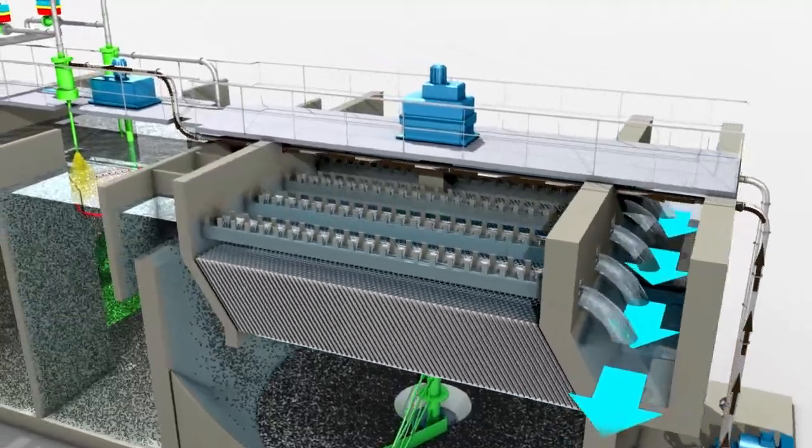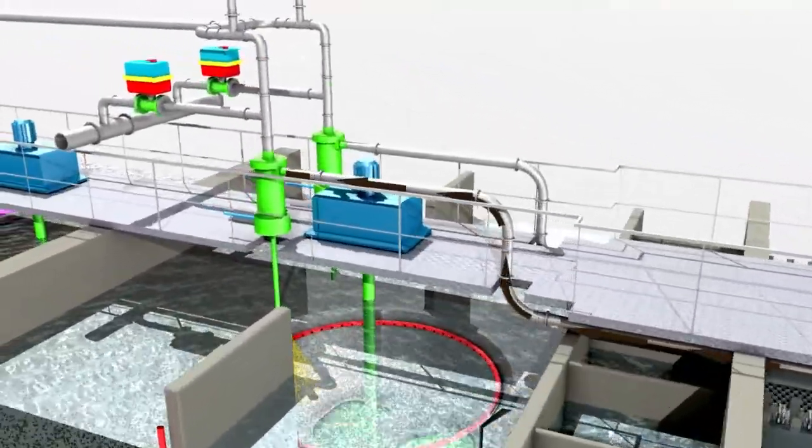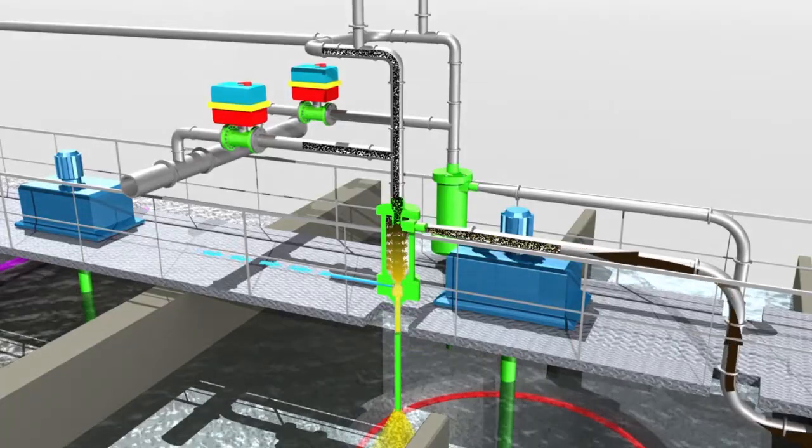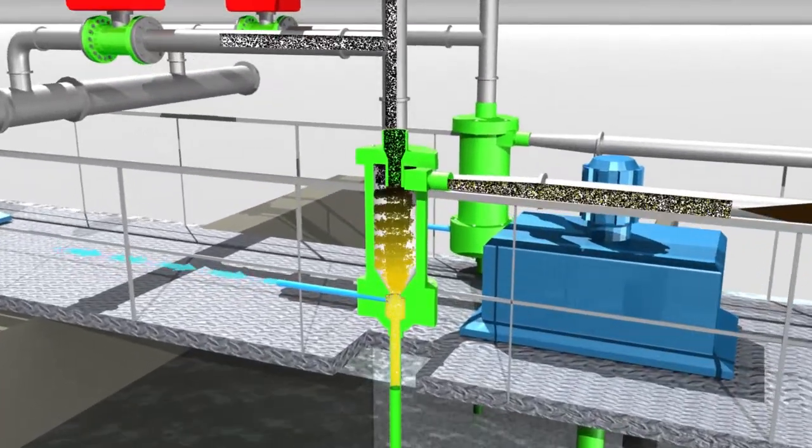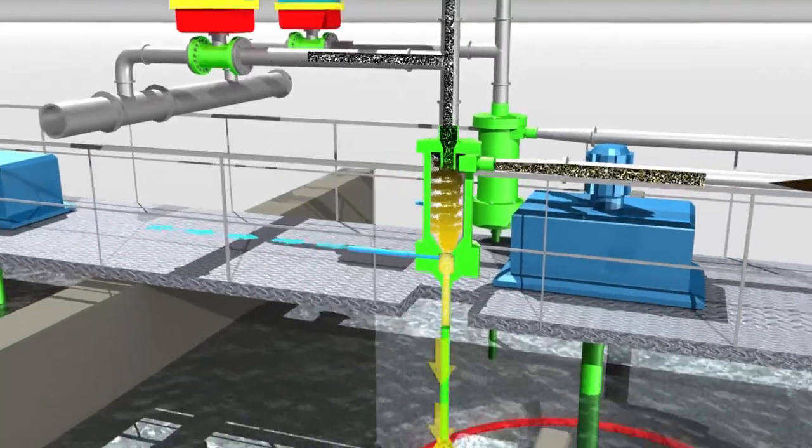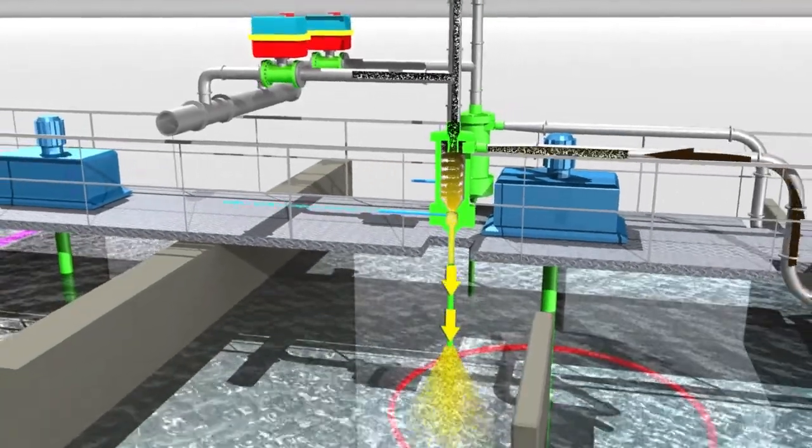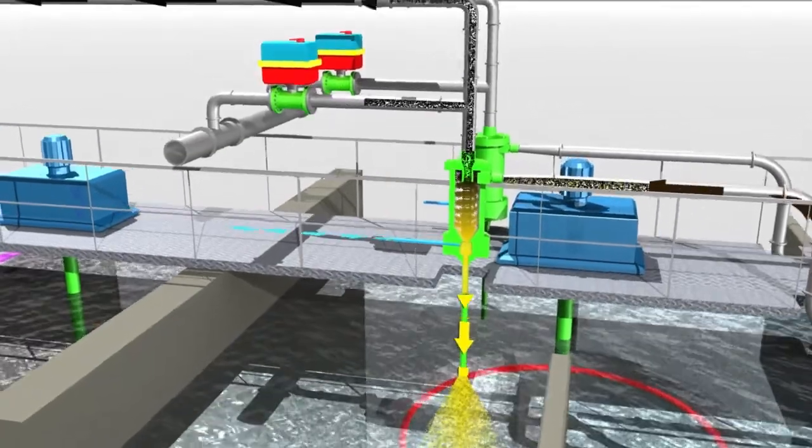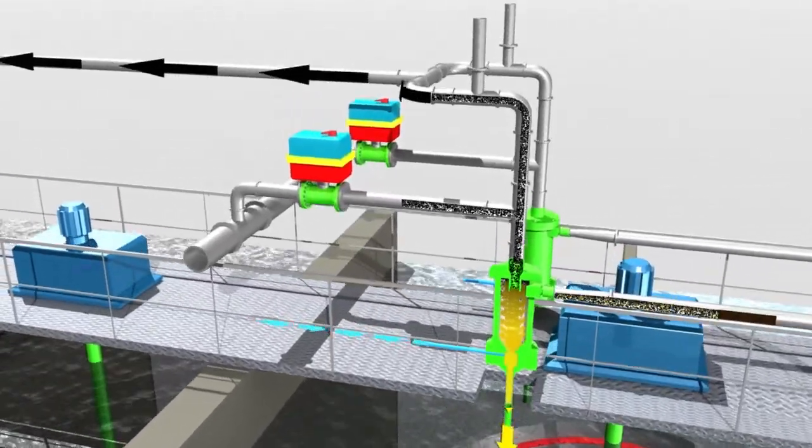From the settling tank, flocks are pumped to a hydrocyclone. Pumping energy is converted into centrifugal forces, causing the light activated carbon to separate from the heavy micro sand. The micro sand is recovered at the cyclone underflow and re-injected into the flocculation tank, whereas the activated carbon exits the cyclone at its overflow.